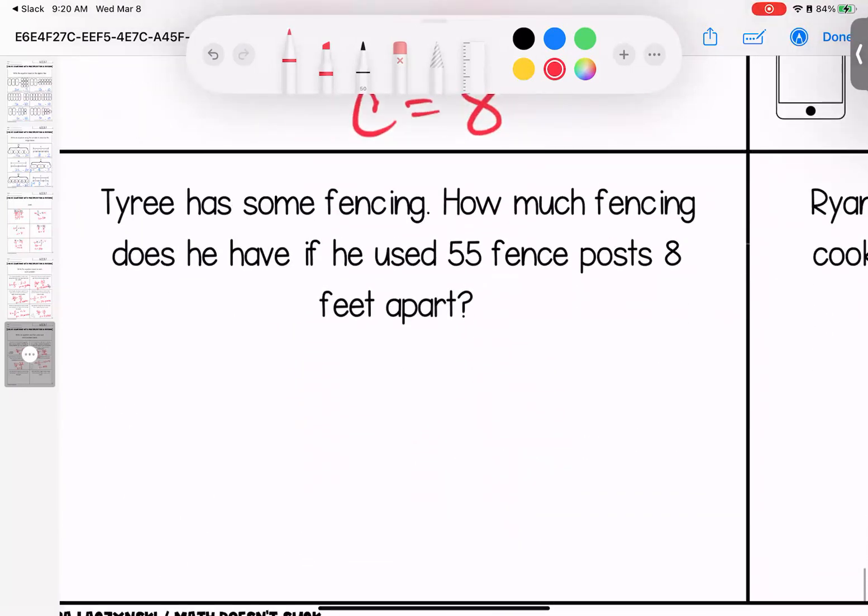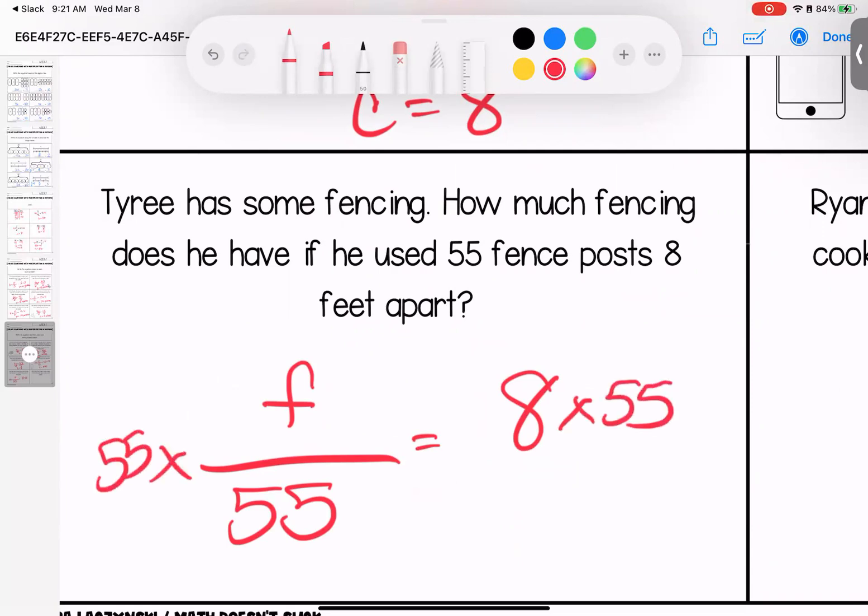Tyree has some fencing. How much fencing does he have if he used 55 fence posts, eight feet apart? So he used some fencing. Once he put it up, he used 55 posts and they were eight feet apart. I want to know how much fencing he has altogether. I'm going to multiply both sides by 55. He ends up with 440 feet of fencing.